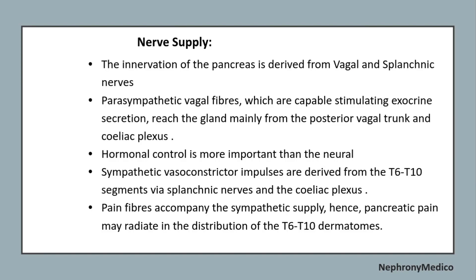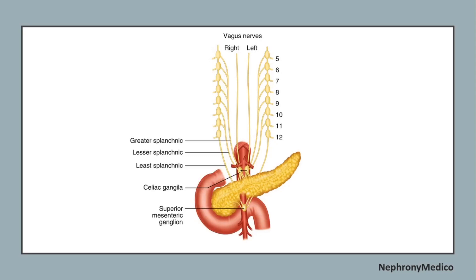Regarding nerve supply: the innervation of the pancreas is derived from the vagal and splanchnic nerves. Parasympathetic vagal fibers, which are capable of stimulating exocrine secretion, reach the gland mainly from the posterior vagal trunk and celiac plexus. Hormonal control is more important than neural. Sympathetic vasoconstrictor impulses are derived from T6 to T10 segments by splanchnic nerves and the celiac plexus. Pain fibers accompany the sympathetic supply; hence pancreatic pain may be referred in the distribution of T6 to T10 dermatomes.